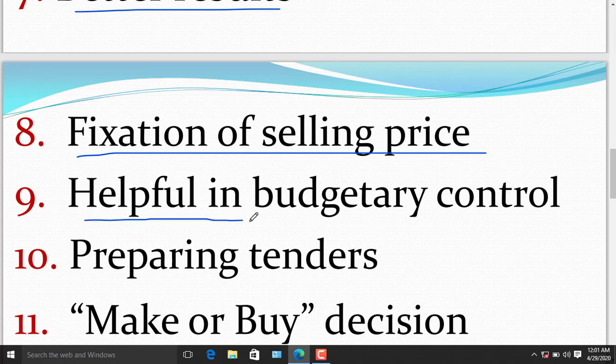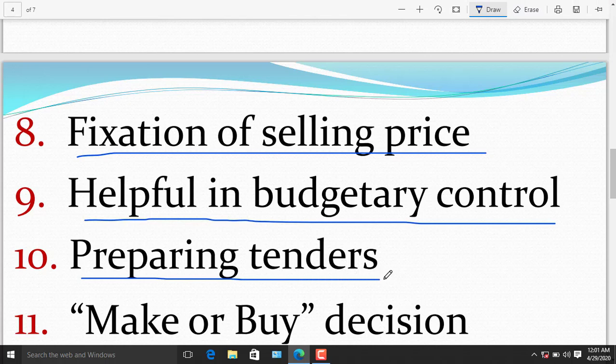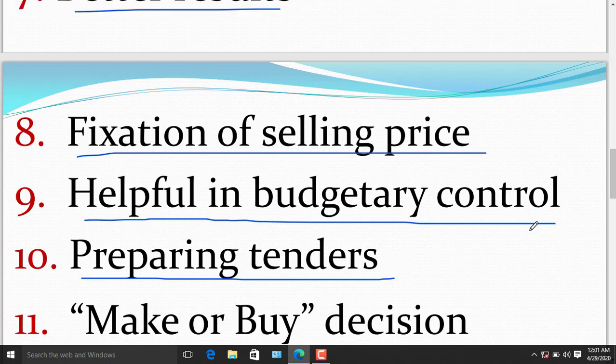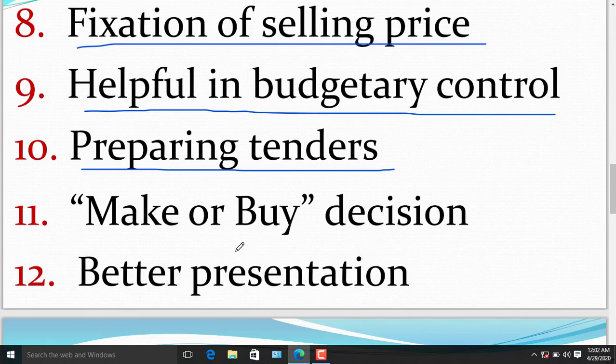The ninth benefit of marginal costing is helpful in budgetary control. The classification of expenses is very helpful in budgeting and flexible budgeting for various levels of activities. The tenth benefit of marginal costing is preparing tenders. Many business enterprises have to compete in the market in quoting the lowest price. That is every organization's ambition or goal. Total variable cost when separately calculated becomes the floor price, or any price above this floor price may be quoted to increase the total contribution. It will be helpful to prepare tenders.